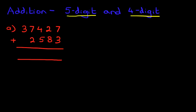Now let's label the columns as well. We've got the units, tens, hundreds, thousands, and the TTH, ten thousands.